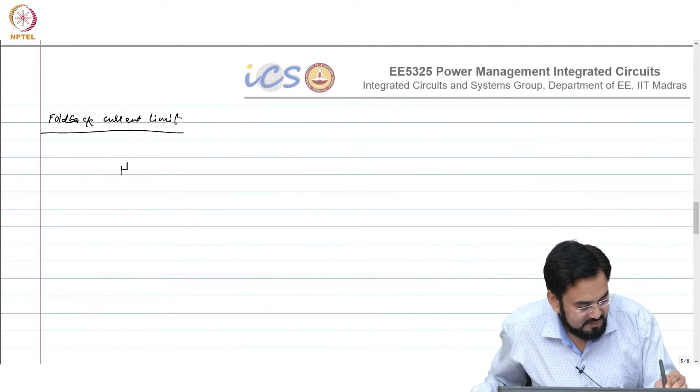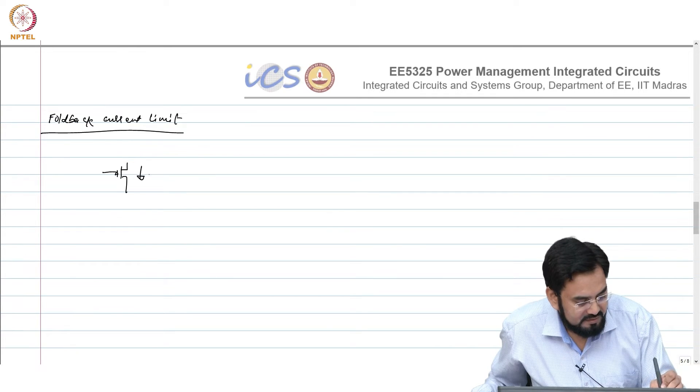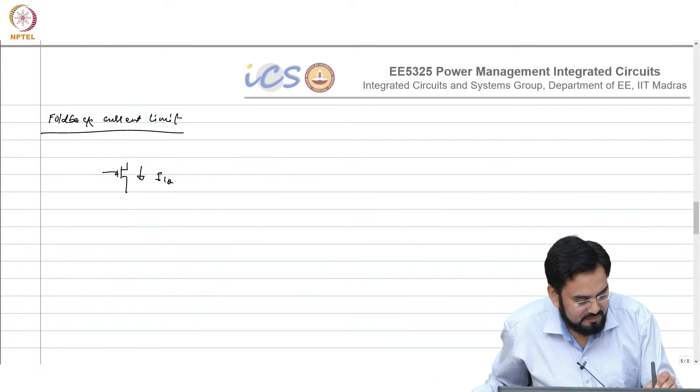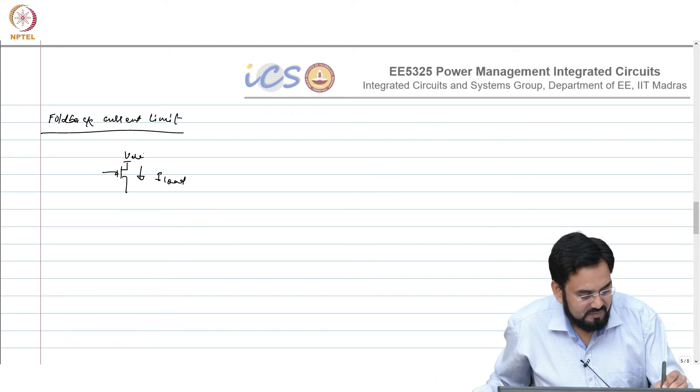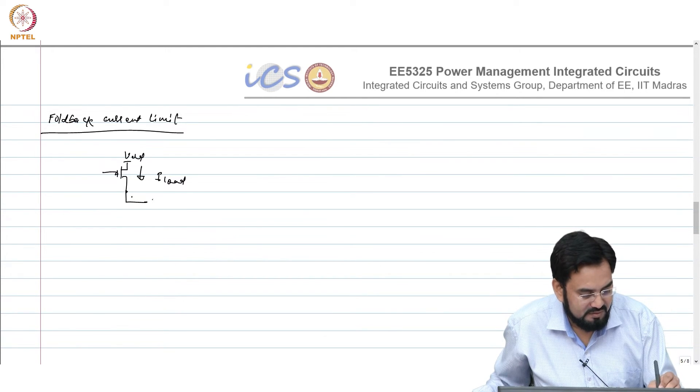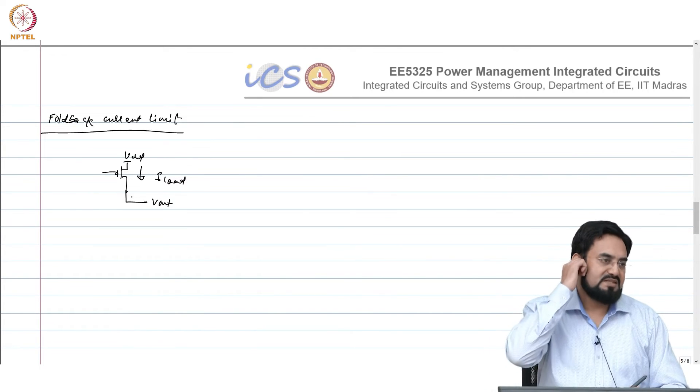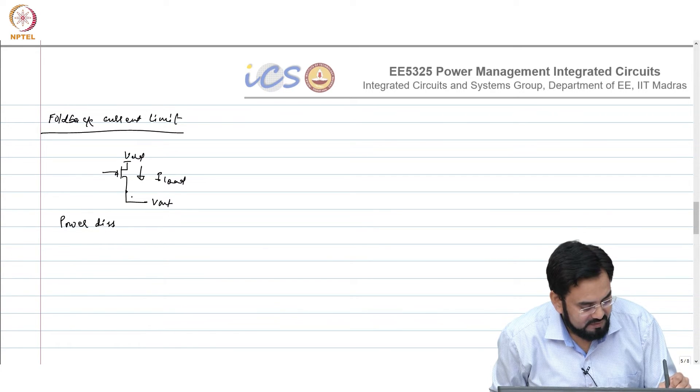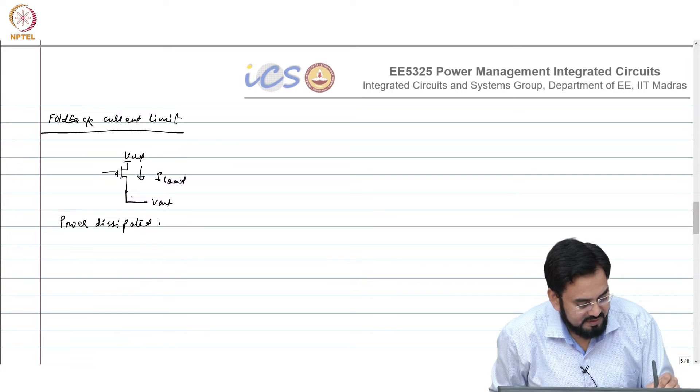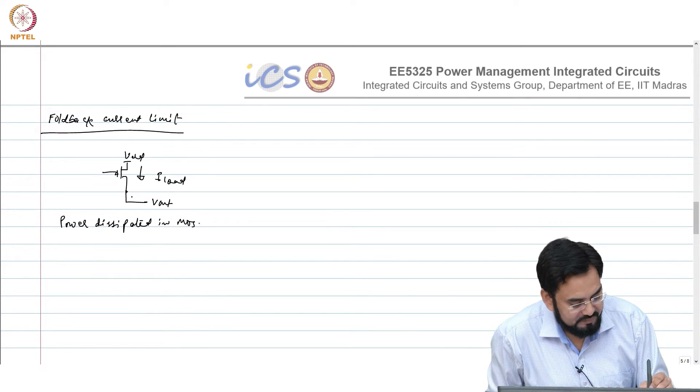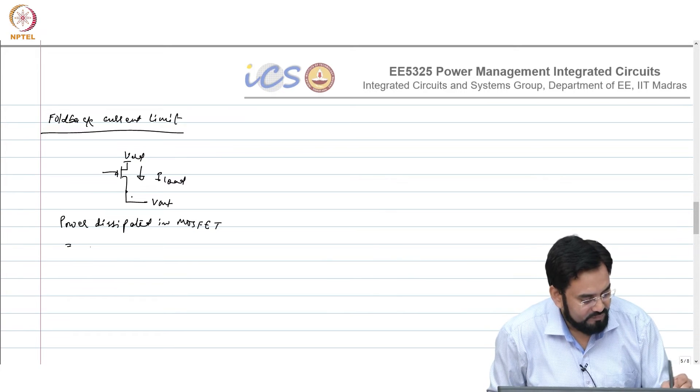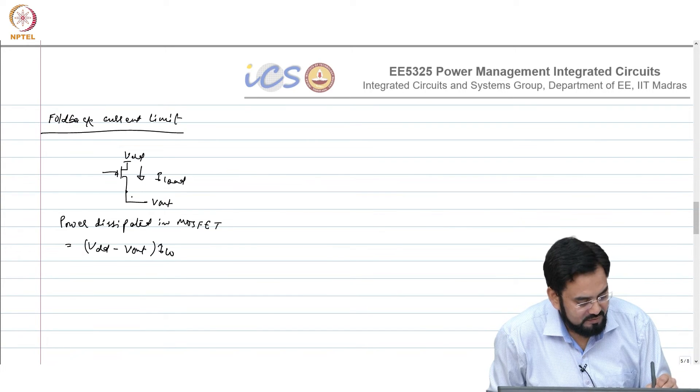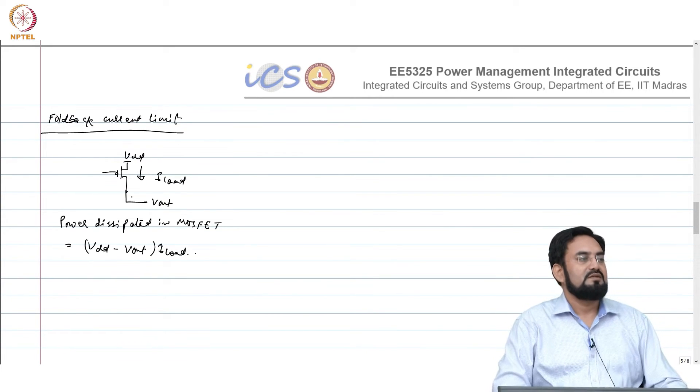What happens? This is your MOSFET. This is your load current, V dd and this is your V out. What is the power dissipation in this device? Power dissipated is V dd minus V out into I load.